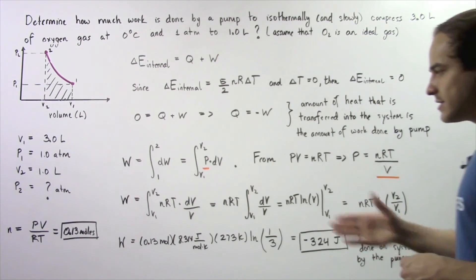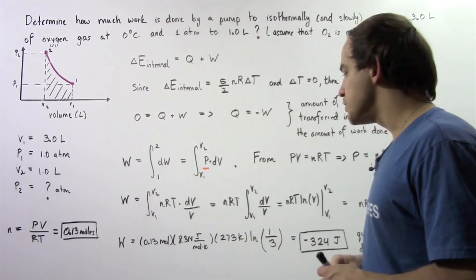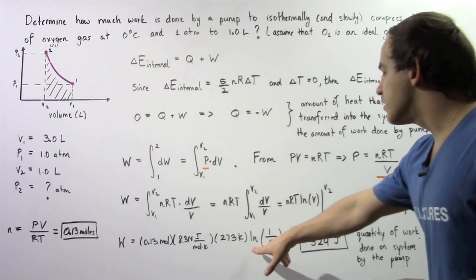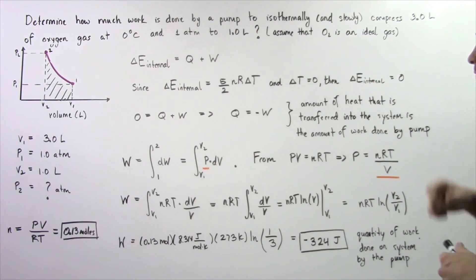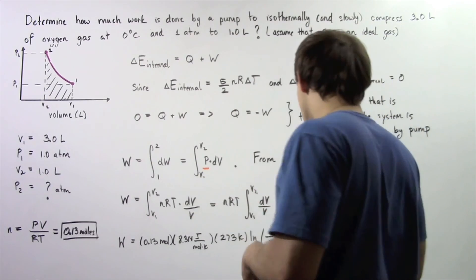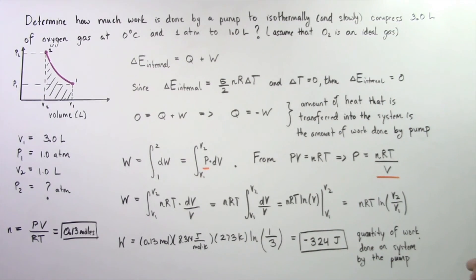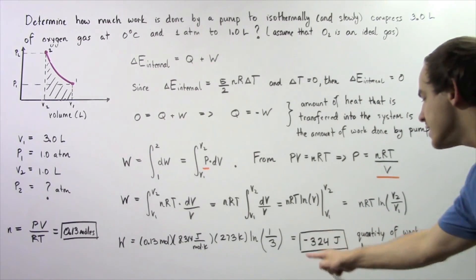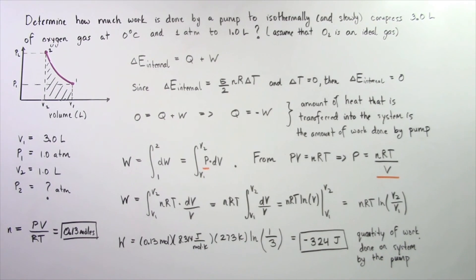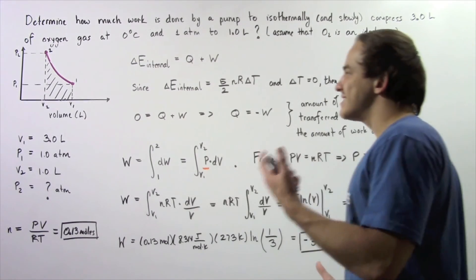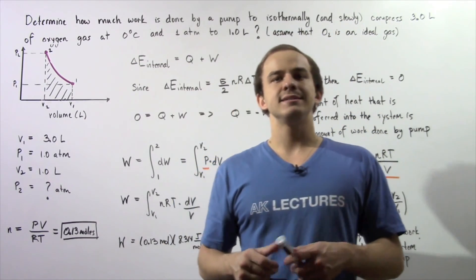Finally, we calculate the work: W = NRT × ln(V2/V1) = 0.13 × 8.314 × 273 × ln(1/3), since V2 = 1 liter and V1 = 3 liters. Plugging these values into a calculator gives W = −324 joules. This work is done on our system by the pump; the surroundings lose this much energy, and this amount of energy is gained by our ideal gaseous system.